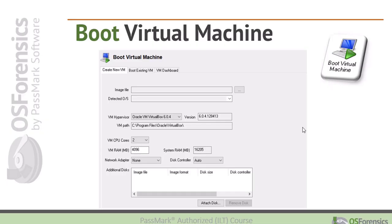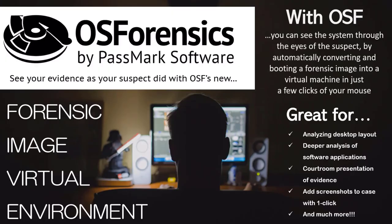One of the single most unique and useful features in the OS Forensics Toolkit is our Forensic Image Virtual Environment feature, also known as the Boot Virtual Machine module. This feature automates the process of taking a forensic image, creating a virtual machine from it, and then booting this VM using your preferred virtual machine software.